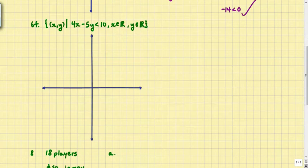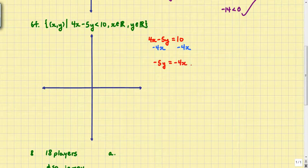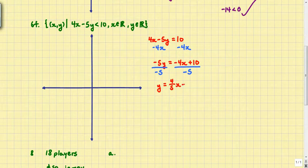This time the difference is we want x and y to be real numbers and not integers. So once again, we want to start with the associated equation, 4x minus 5y equals 10. I'm going to subtract 4x from both sides. I will get negative 5y equals negative 4x plus 10. I'm going to divide both sides by negative 5. So I end up with y equals 4 over 5x minus 2.